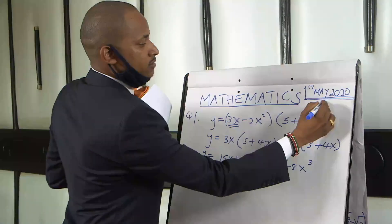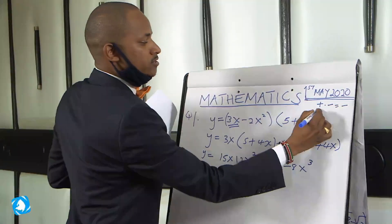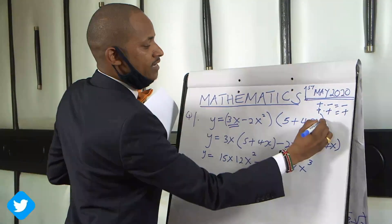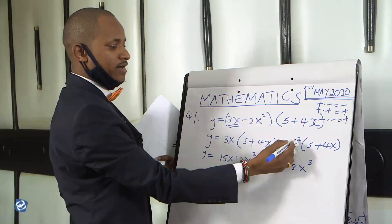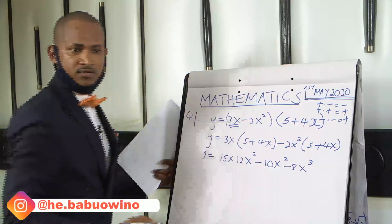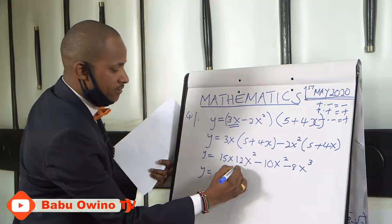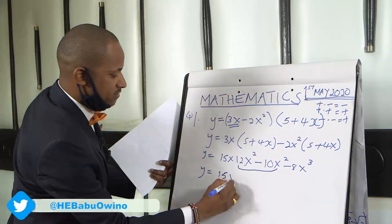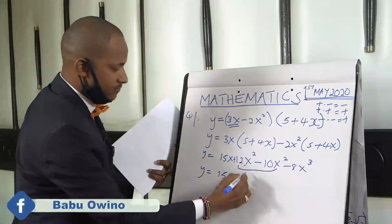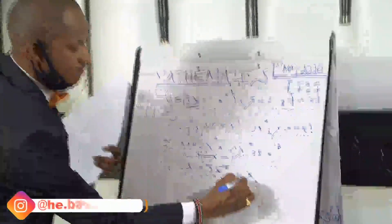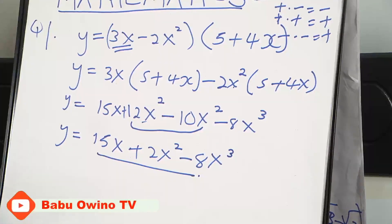Now there is a fundamental rule: when you have positive multiplied by negative, you get negative; positive multiplied by positive, you get positive; then negative multiplied by negative, you get positive. That's why when we have minus 2x squared times plus 4x, you get minus 8x cubed. Now our y becomes — simplify further by collecting the like terms — 15x plus 12x squared minus 10x squared is 2x squared minus 8x cubed. This is our simplified value for y.